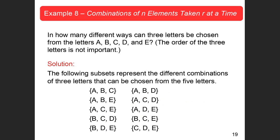In how many different ways can three letters be chosen from the letters A, B, C, D, and E, where the order of the three letters is not important? There are five letters, so this would be a five combination three. Going to the calculator, Desmos has a combination button — use NCR. Plugging in five comma three gives 10. So there are 10 different ways that three letters can be chosen from five letters.